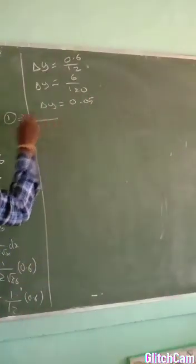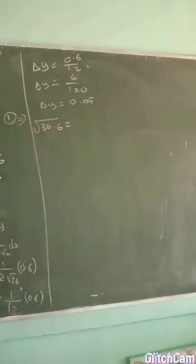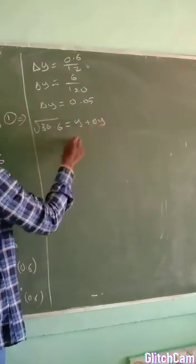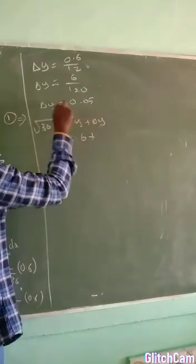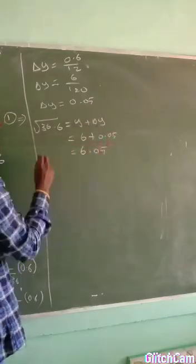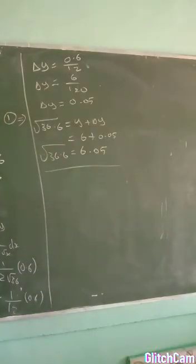So come to the final answer from equation 1. We have square root of 36.6, we assume y plus delta y. We already found y equal to 6. Now we have delta y equal to 0.05. Finally becomes 6.05. So square root of 36.6 equals 6.05.